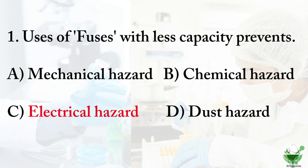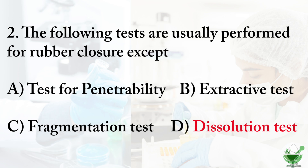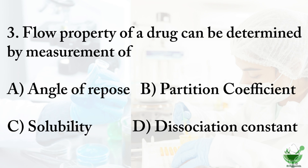Question number two: the following tests are usually performed for rubber closure, except — option A: test for penetrability, option B: extractive test, option C: fragmentation test, option D: dissolution test. The correct option is dissolution test. The tests used for rubber closure are: sterility test, fragmentation test, self-sealability, pH of aqueous extract, light absorption test, reducing substance, evaporation, and penetrability test.